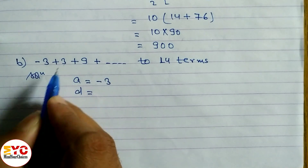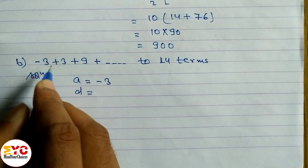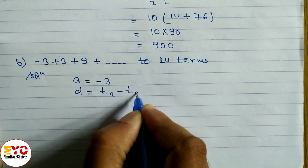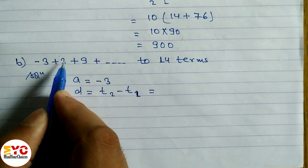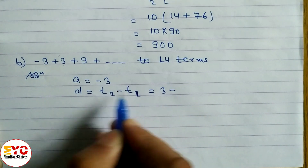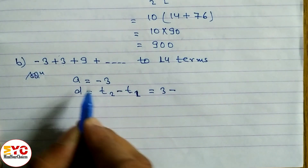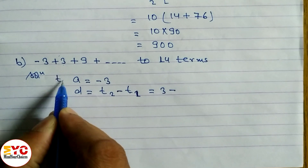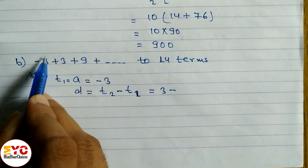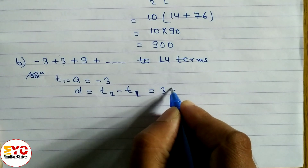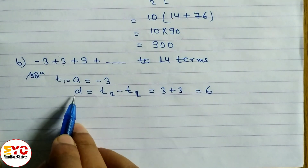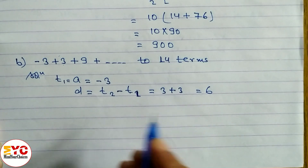Common difference d = t2 − t1. T2 is 3, and t1 is −3. So d = 3 − (−3) = 3 + 3 = 6. Therefore d = 6. Number of terms n = 14.